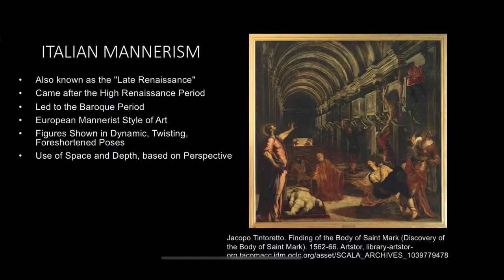This Italian Mannerism period is between the High Renaissance period and the Baroque period. According to an online article, these works typically feature active figure groups set in a forward plane to maximize formal monumentality and narrative intensity. The figures are shown in dynamic, twisting, or foreshortened poses reminiscent of contemporary Mannerist painting, but typically have more mass and energy and lack the courtly elegance of, for example, Parmigianino or Francesco Salviati.